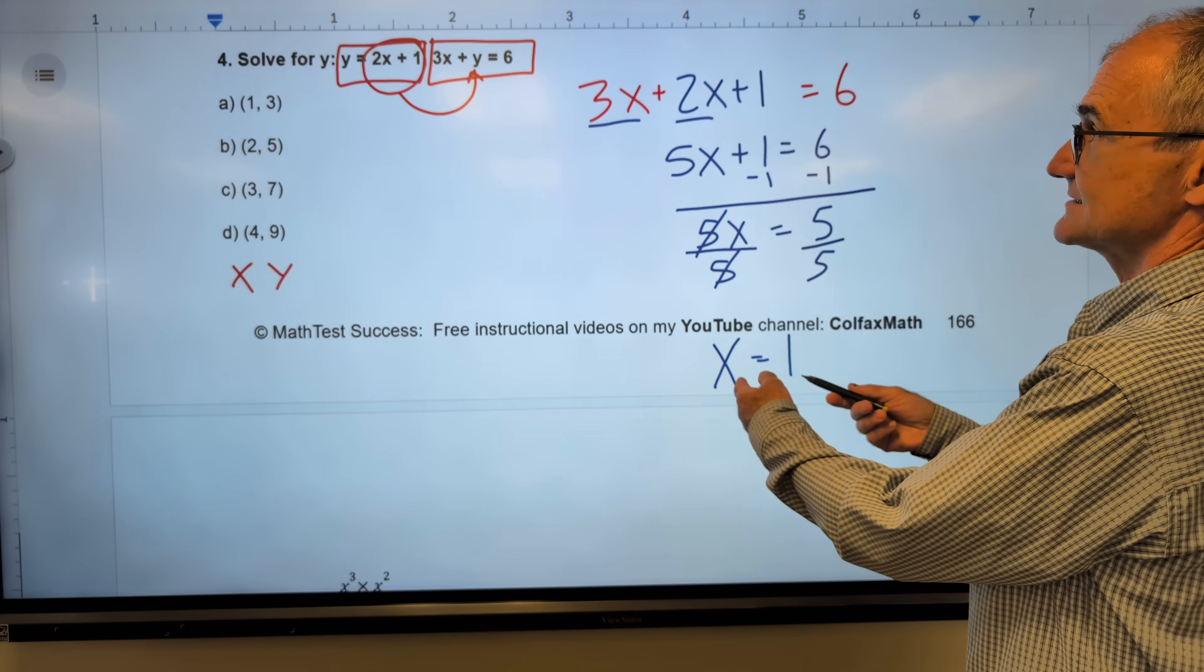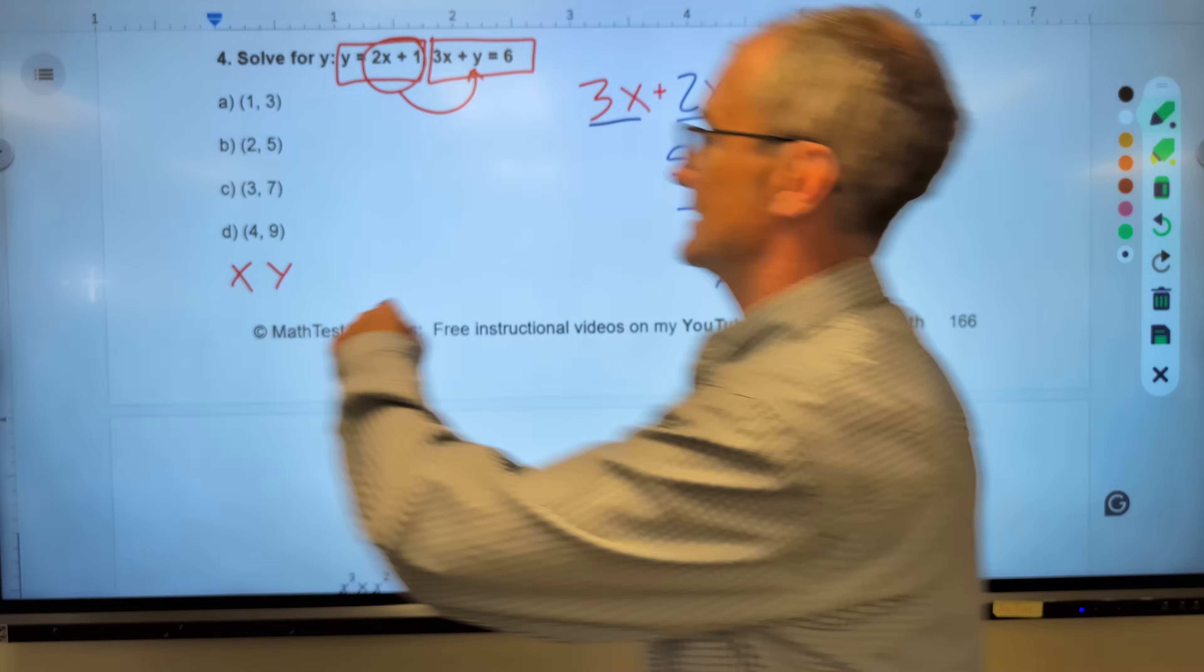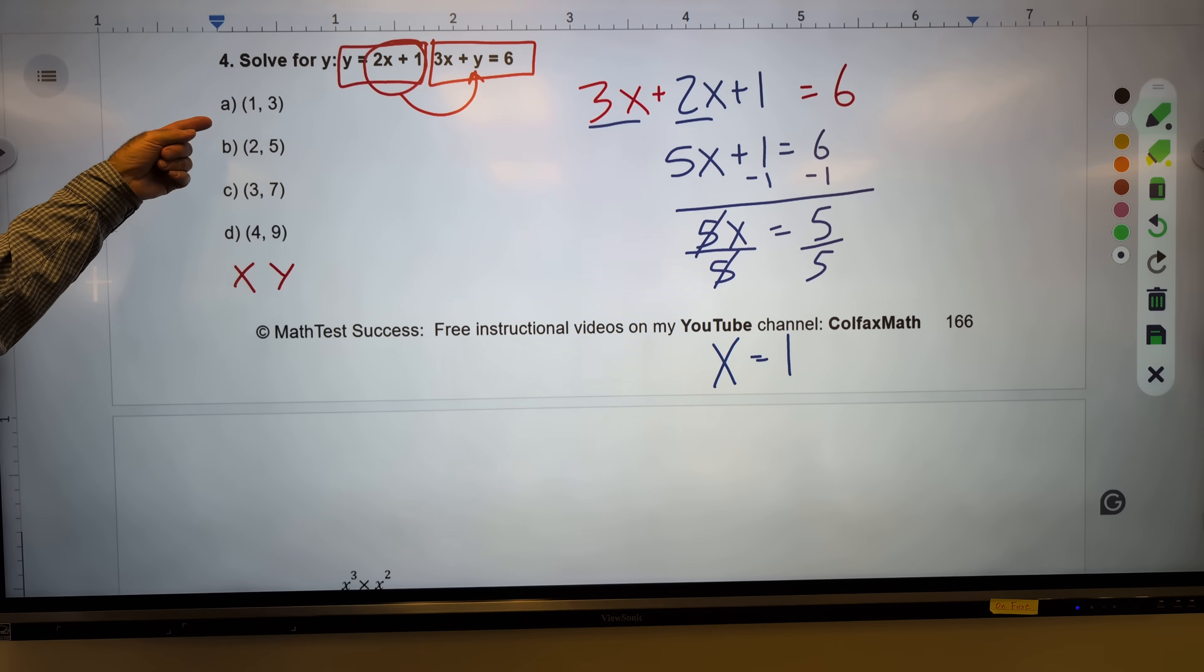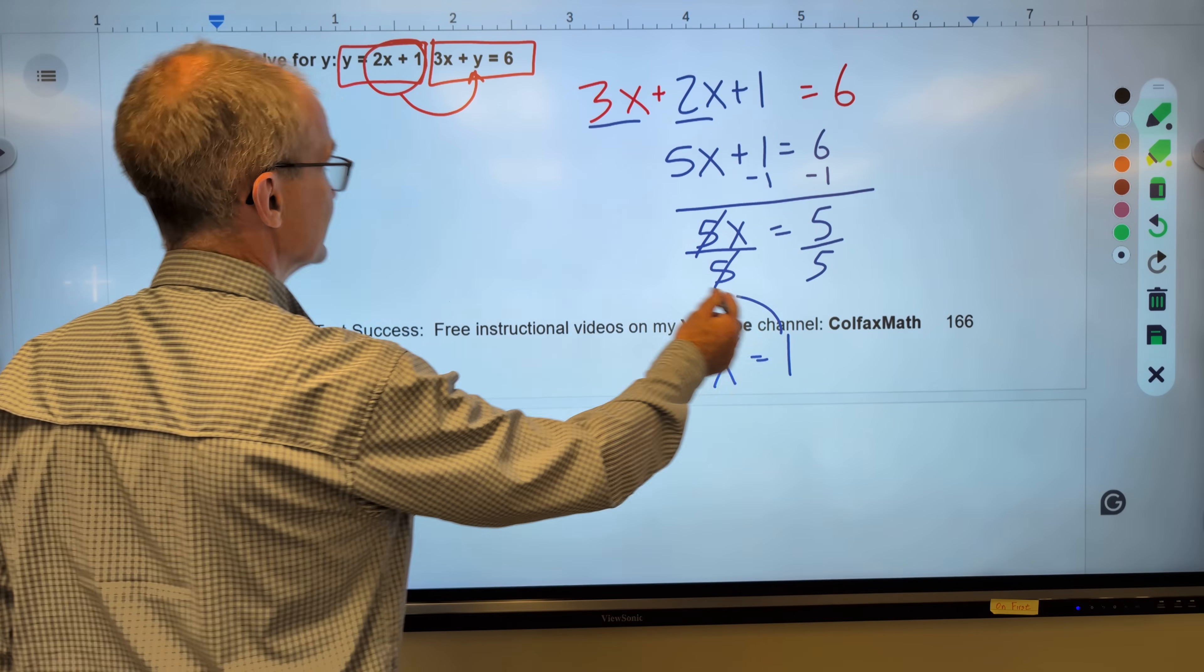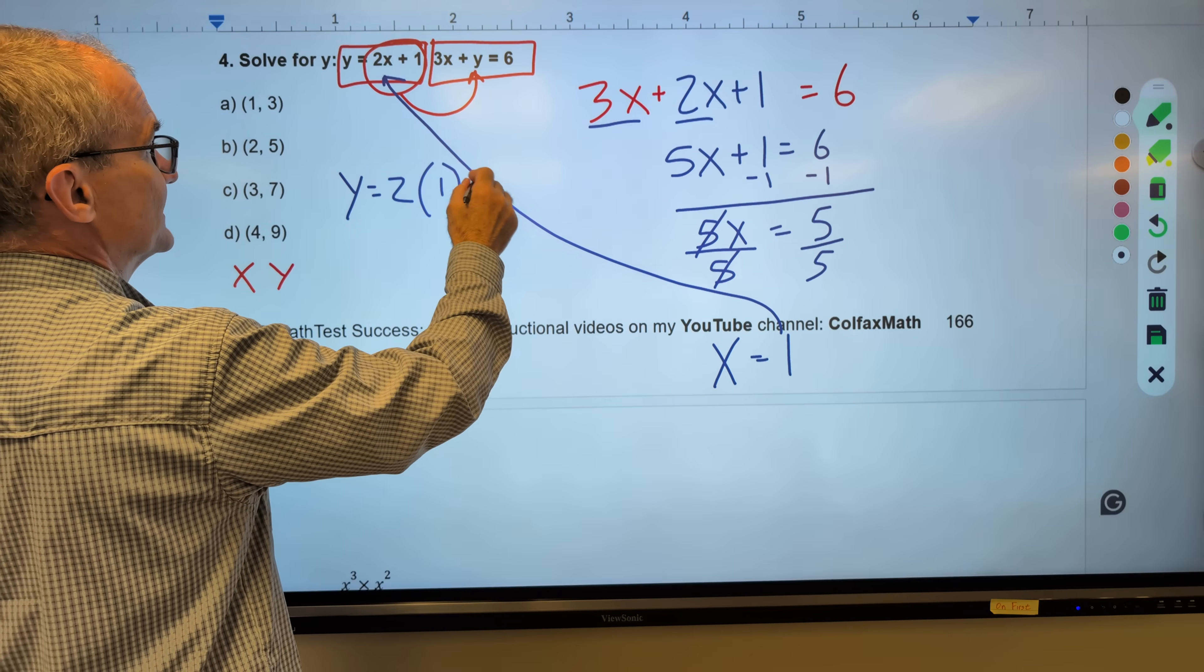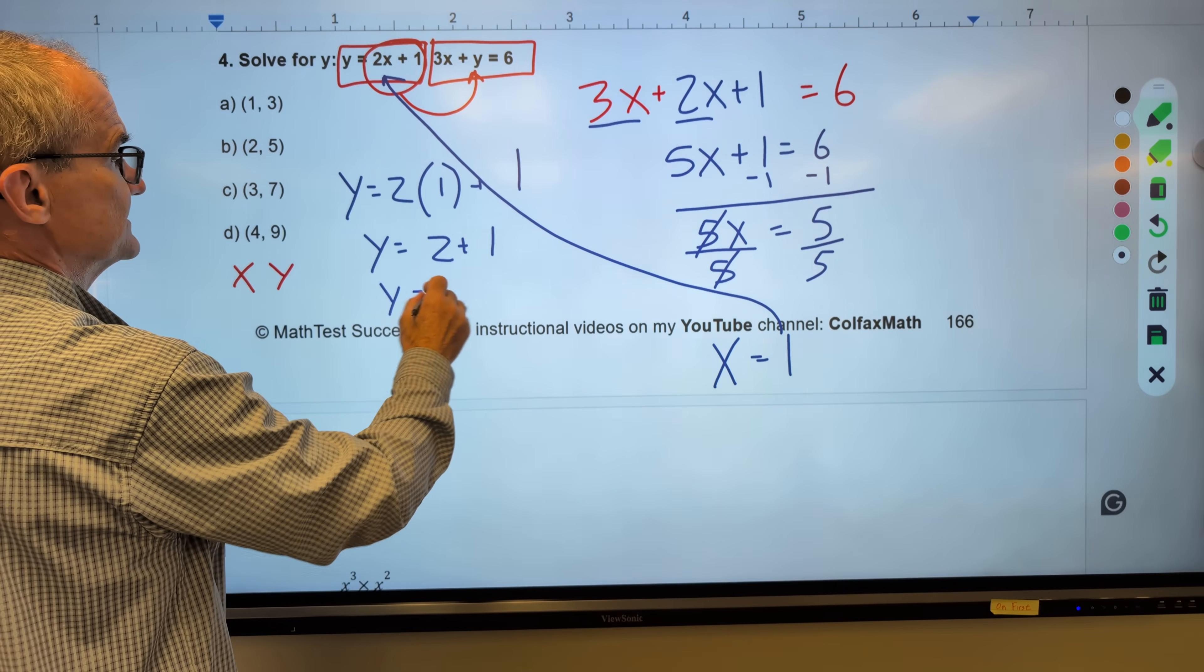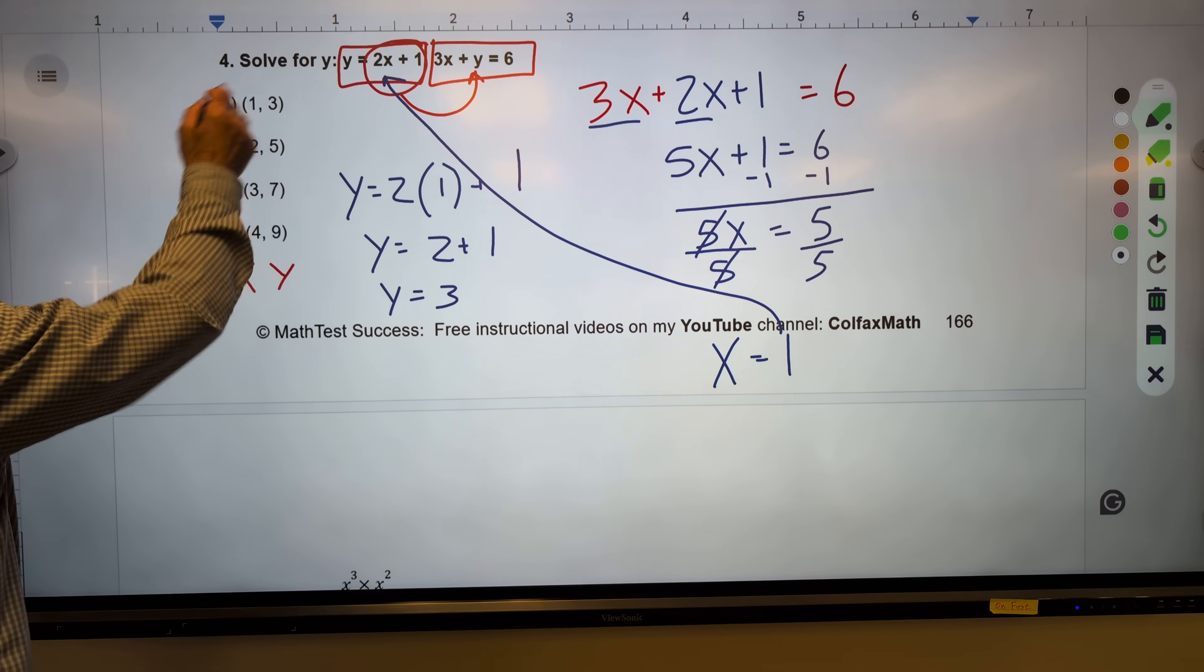This is an x value and it says to solve for y. This is the only x value up here in A where x is equal to 1. So I could just circle A and that's the correct answer. But as a check to solve for y, I'm going to take that 1 and plug it in for x. So I have y equals 2 times x plus 1. y is equal to 2 plus 1. y is equal to 3. My first value in my coordinate is 1x. My second value is y3. Correct answer, answer A.